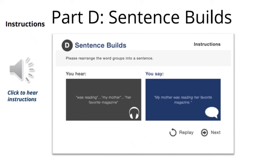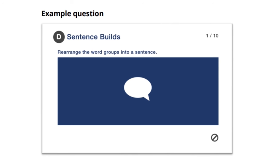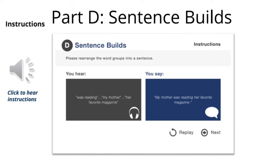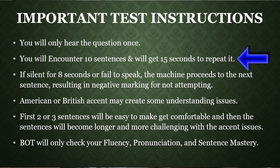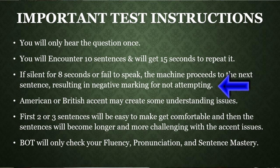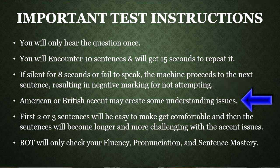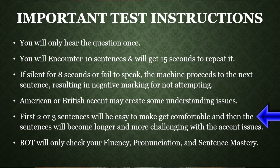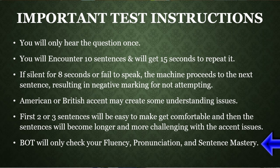Part D: Sentence Builds. In this section you need to rearrange word groups into a sentence. You will have three short phrases in a random order and need to rearrange them into a sentence. For example, the bot will say 'was reading my mother her favorite magazine' and your reply would be 'my mother was reading her favorite magazine.' You will only hear the sentence once. You will encounter a total of 10 sentence build questions and will get 15 seconds to build the sentence. If you remain silent for 8 seconds or fail to speak at all, the machine will proceed automatically. The first two or three sentences will be easy, but later it will become challenging due to long sentences and accent issues. Since we cannot skip any sentence due to negative marking, we must listen to all three phrases carefully and try to rearrange them quickly. In this section the bot will evaluate you on fluency, pronunciation, and sentence mastery.